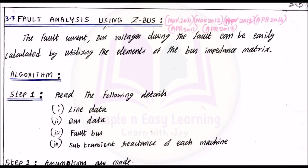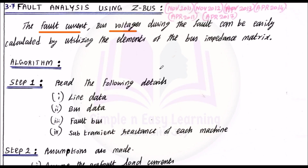Fault analysis using bus impedance matrix. Today we are going to discuss the flowchart and algorithm for this topic. The fault current and bus voltage during the fault can be easily calculated by utilizing the elements of the bus impedance matrix. First we will see the flowchart, then discuss the algorithm.